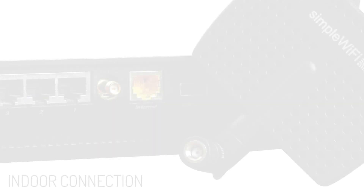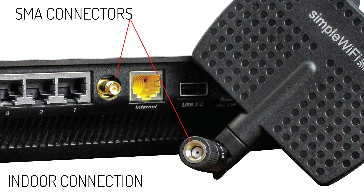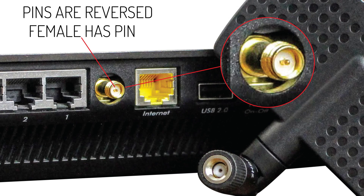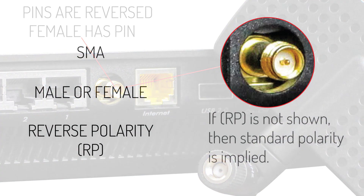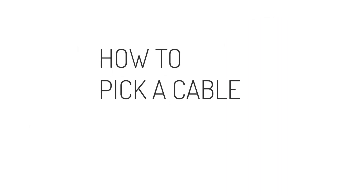Now jumping into the most confusing part about connectors, which is polarity. This typically only applies to SMA connectors, which are indoor connections. As you can see, the antenna has an SMA male because the threads are on the inside, and the router has an SMA female because the threads are exposed. However, the pin is actually on the female — it's reversed. So you have an SMA male or female Reverse Polarity (RP). The RP designation implies that the pin is on the opposite gender.